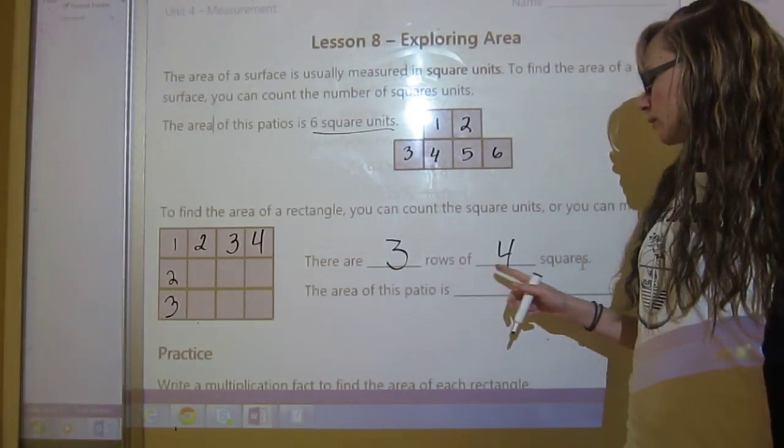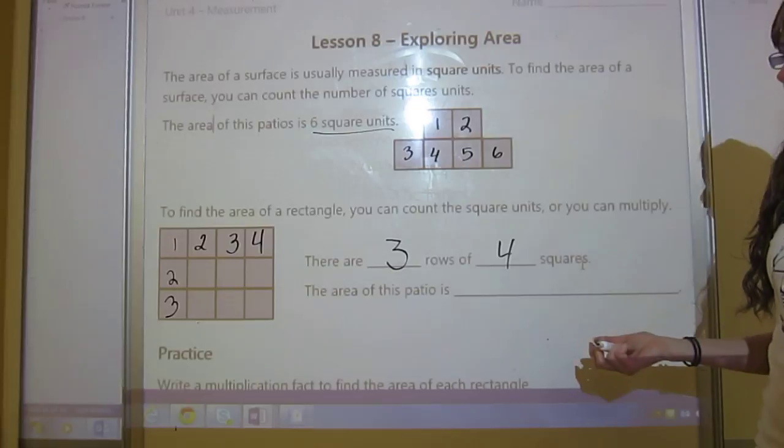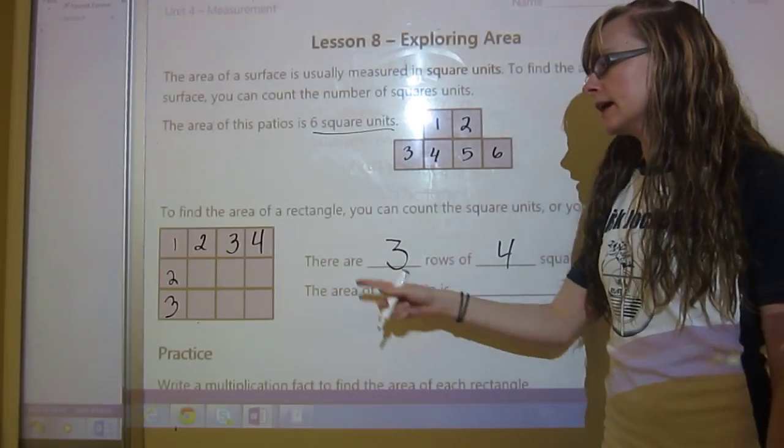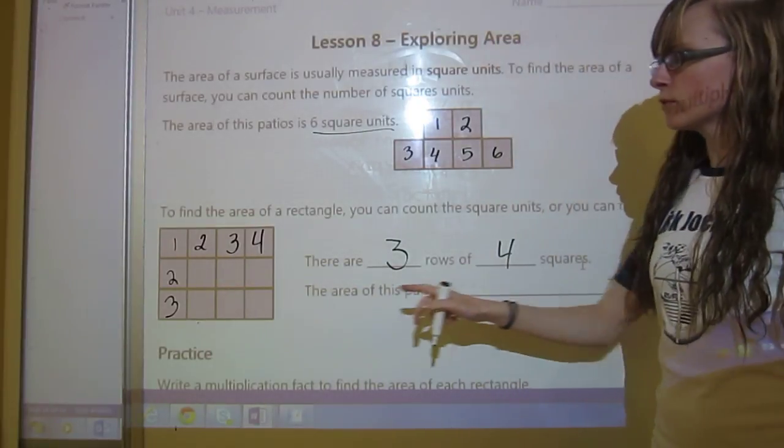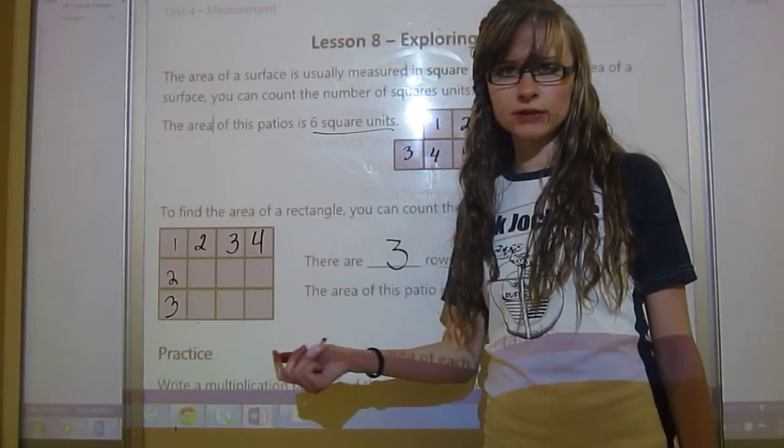So there are three rows of four squares. To find the area of this, you can just go three times four. You can just go length times width, three times four.